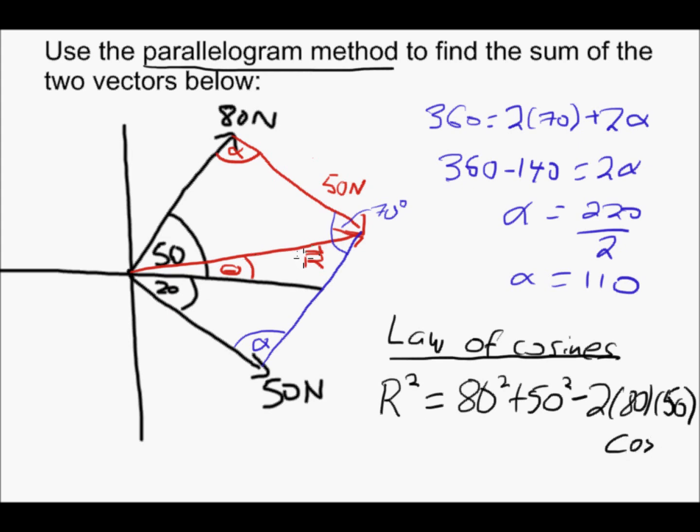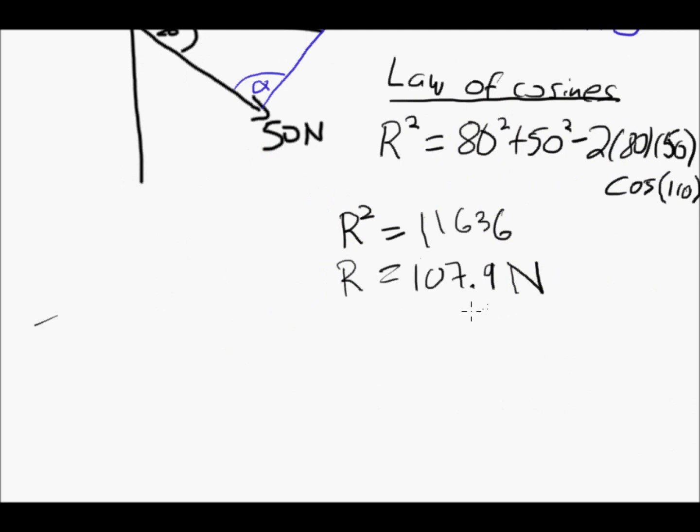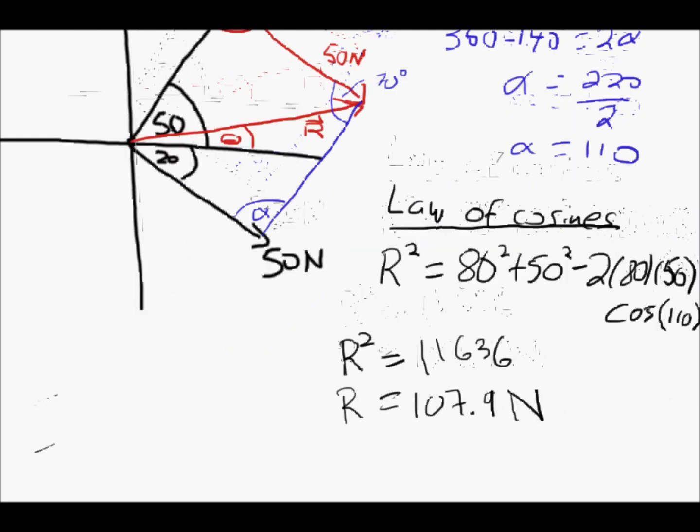So r is this angle, or this side here, and alpha is the angle for it, which we know now is 110 degrees. All I have to do now is evaluate that. So r equals 107.9 newtons. So now I need to know the angle theta.